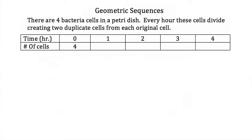Here we're told that there are four bacteria cells in a petri dish and every hour these cells divide, creating two duplicate cells from each original cell. So if we start with four bacteria cells and we wait an hour, we'll have eight bacteria cells because all of those will have divided and we'll have two for each one. If we wait another hour, we'd end up with 16 bacteria cells because these eight have divided into 16 total. Wait another hour, we'll have 32, and wait another hour and we'll have 64 bacteria cells.